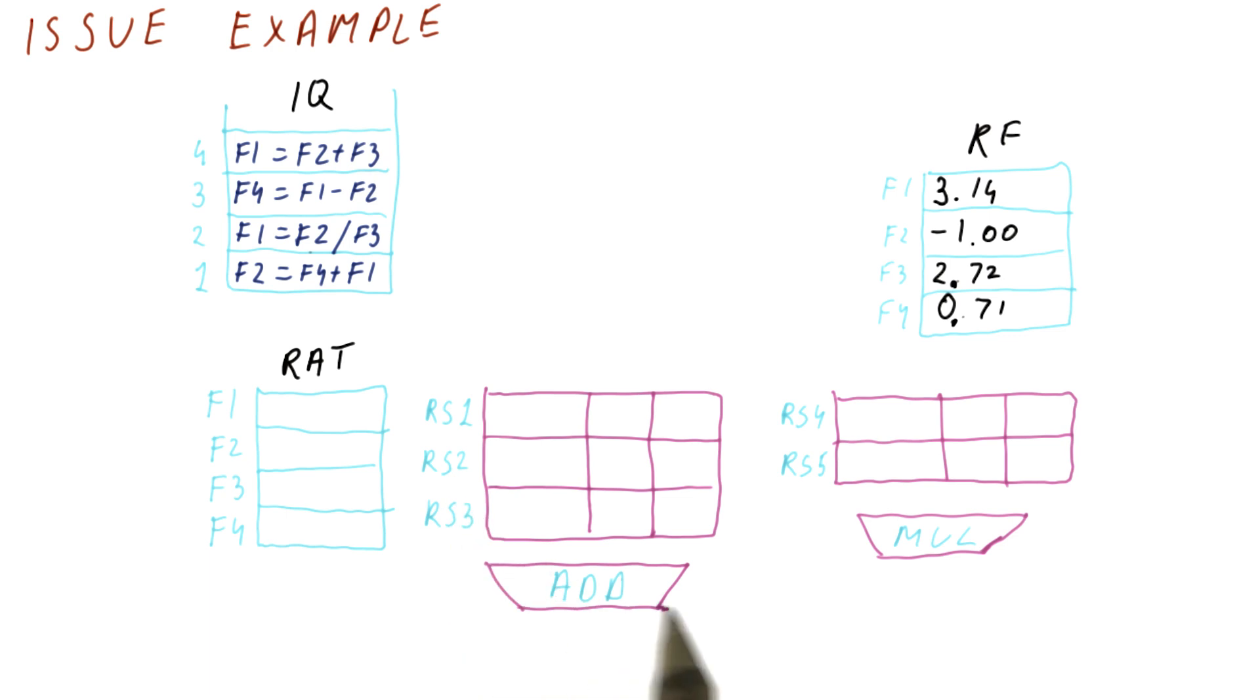And finally, we're going to have our reservation stations. We're going to name them RS1, 2, 3 for the add reservation stations, and 4 and 5 for the multiplication reservation stations. So we really have five reservation stations. But note that you can use only these three for adds, and only these two for multiplies and divides.